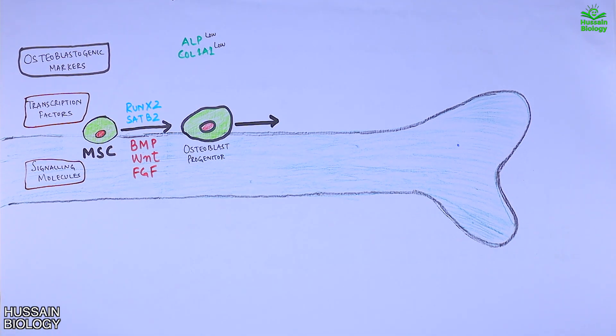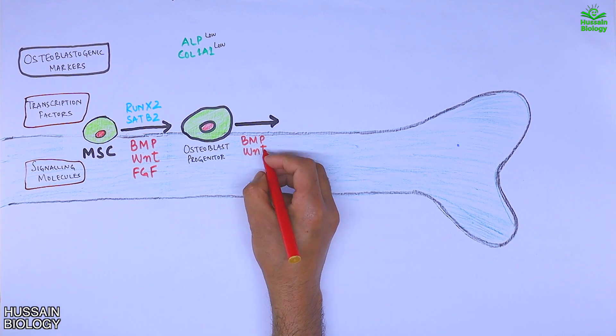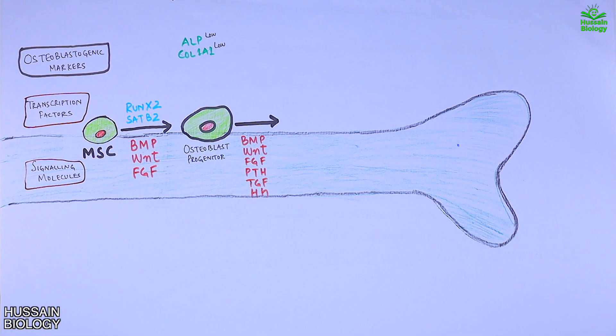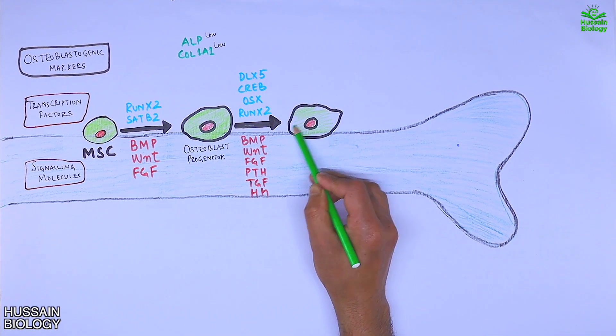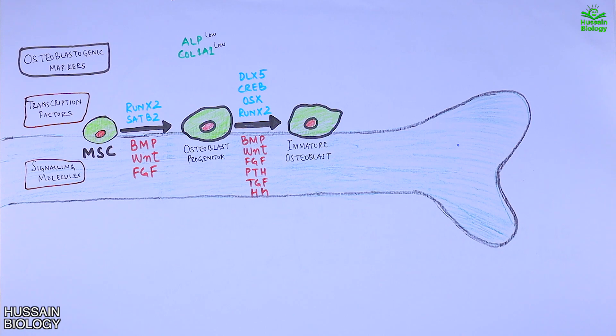More signaling molecules act upon it like BMP, WNT, FGF, PTH, TGF, and HGF, and drive signaling pathways where we get upregulation of transcription factors like RUNX2, OSX, CREB, and DLX5. All these transcription factors differentiate the progenitor cell into immature osteoblast, which displays markers like ALP and COL1A1 in high concentrations, and also the BSP marker.